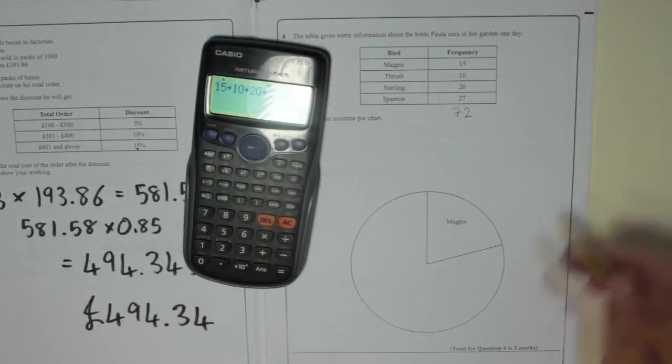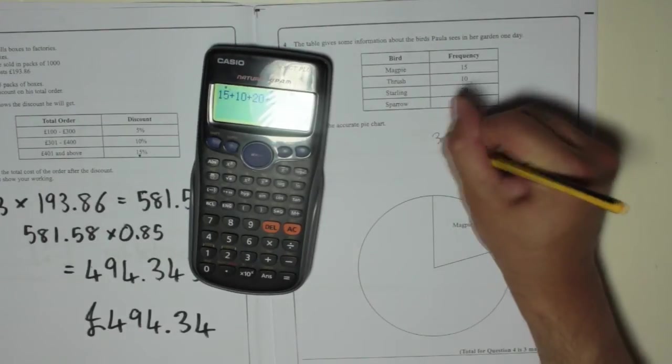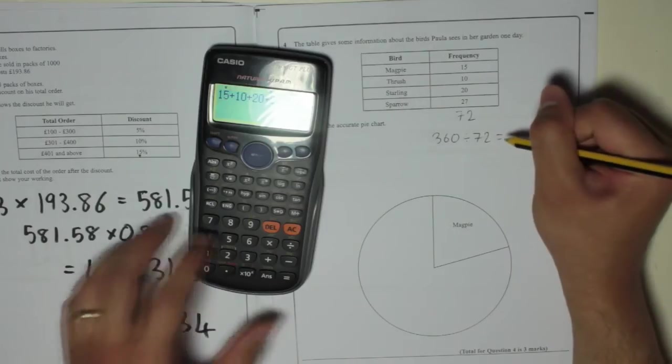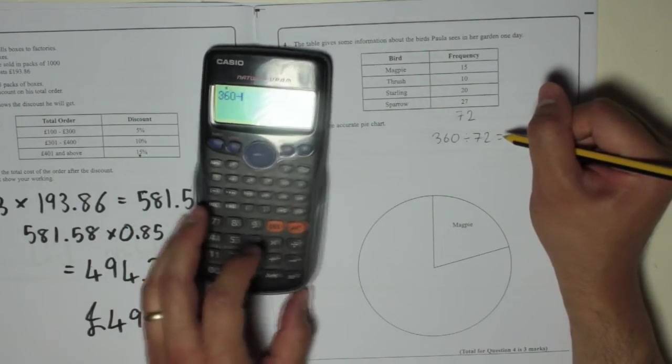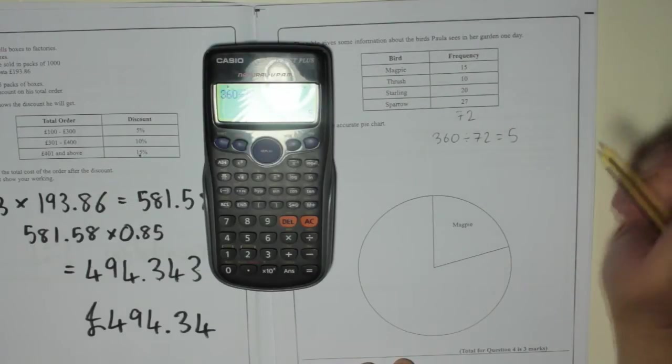If there's 360 degrees in total, each bird is worth 360 share it amongst the 72. So 360 divided by 72 is 5. That means every bird is worth 5 degrees.